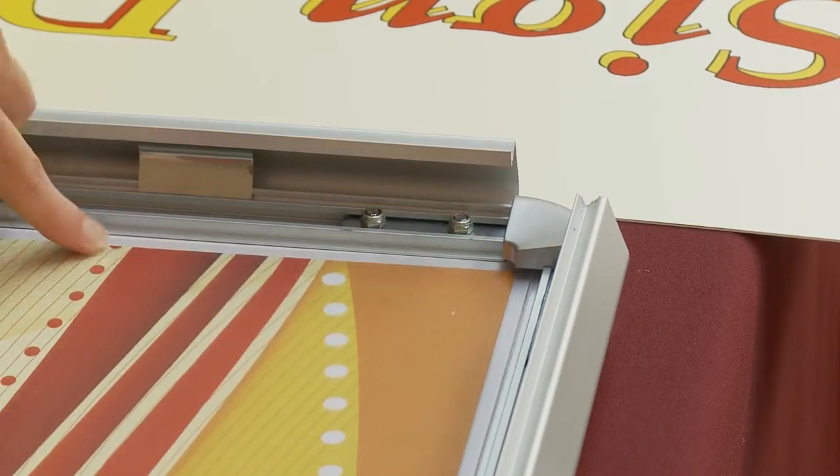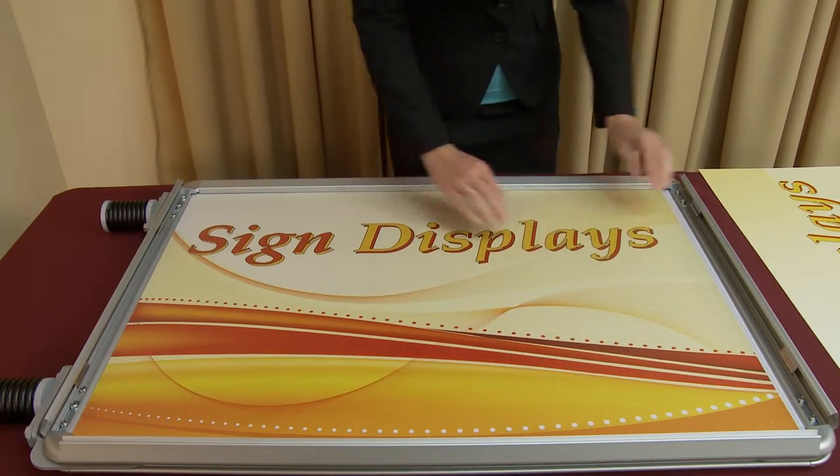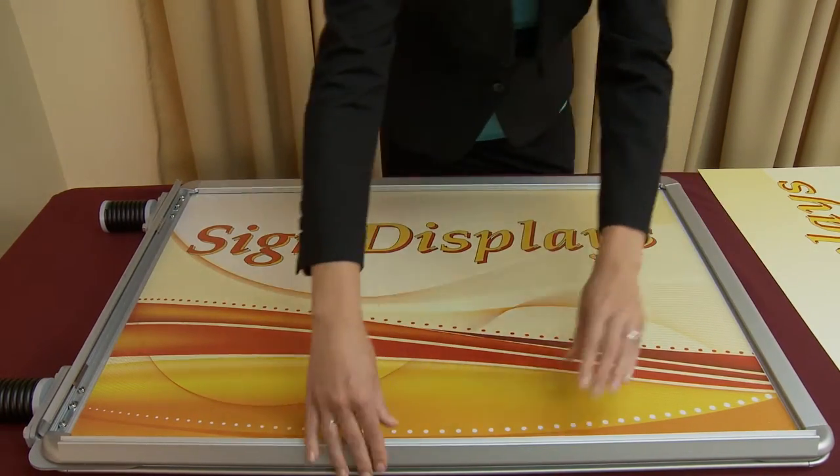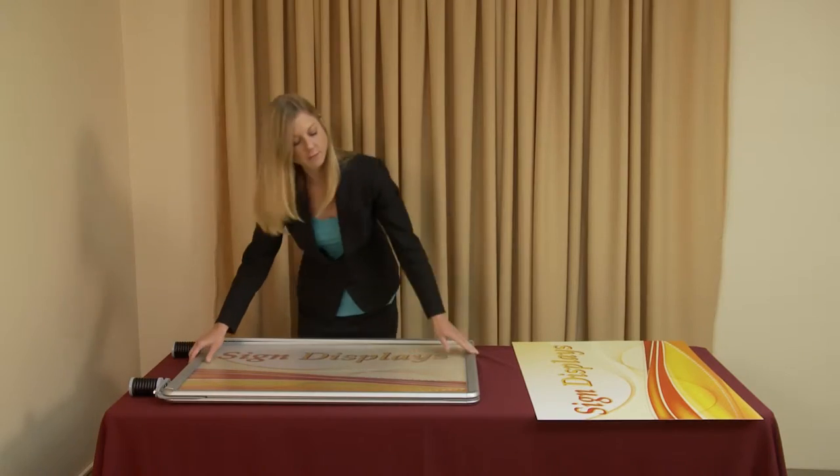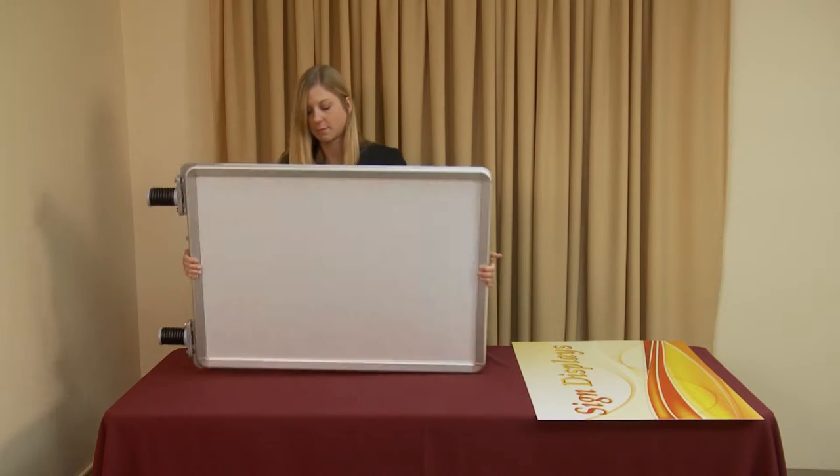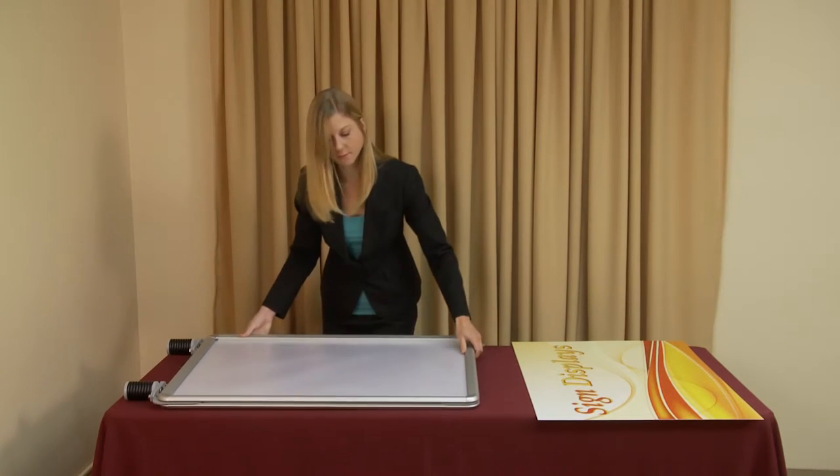With all four corners secured, snap the four hinged snap edges closed. Next, flip the frame over and repeat the previous steps to the second side.